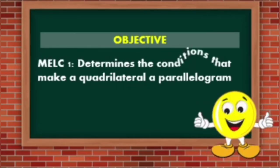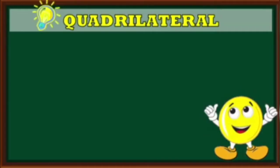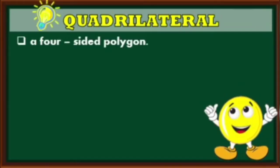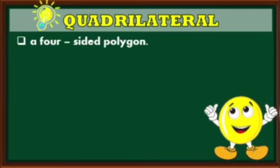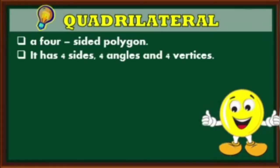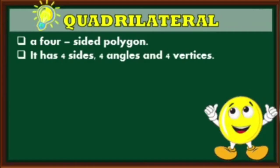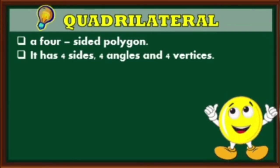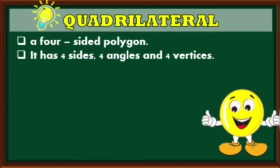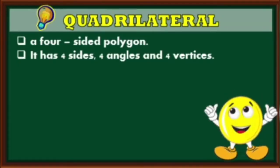So what is a quadrilateral? A quadrilateral is a four-sided polygon. It has four sides, four angles, and four vertices.